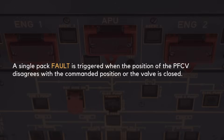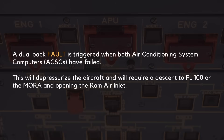A single PAC fault is triggered when the position of the PFCV disagrees with the commanded position or the valve is closed. A dual PAC fault is triggered when both air conditioning system computers, ACSCs, have failed. This will depressurize the aircraft and will require a descent to flight level 100 or the MORA, and opening the Ram Air Inlet.